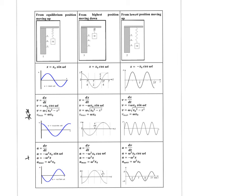The four equations marked with asterisks — v in terms of x, v_max, a in terms of x, and a_max — are the same for all three starting cases. This is because displacement is always measured from equilibrium regardless of starting position. Only the x-in-terms-of-t, v-in-terms-of-t, and a-in-terms-of-t equations differ between cases.